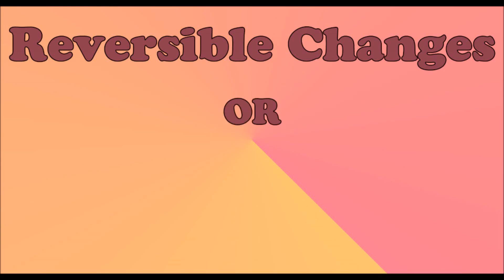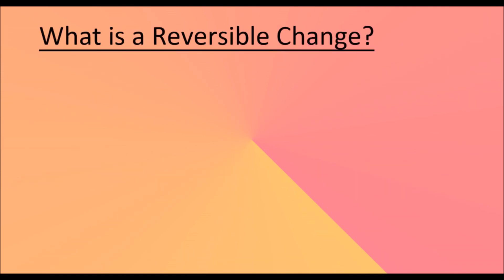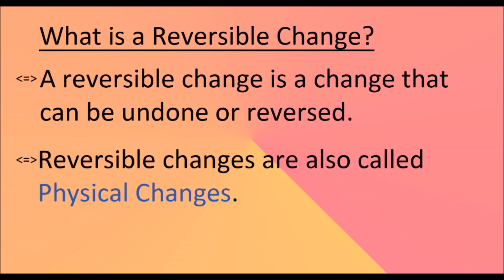Reversible Changes or Physical Changes by K8SchoolLessons.com. A reversible change is a change that can be undone or reversed. Reversible changes are also called physical changes because reversible changes change the physical appearance of substances.